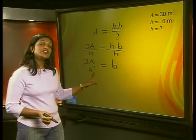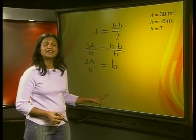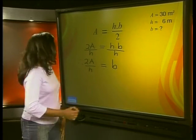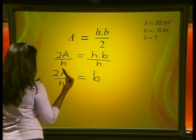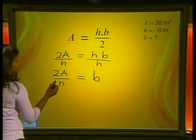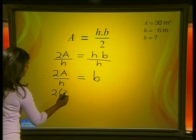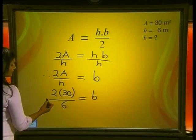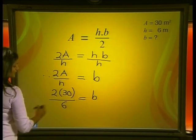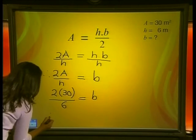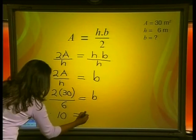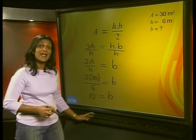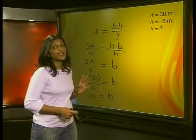So you see, B is written on its own on one side, which means that B is the subject of the formula. Let's check if our answer matches with the one we got previously. We know that A is 30 meters squared and H is 6 meters. So substitute these values here. We get 2 times 30 divided by 6 is equal to B. Simplifying this, we get 2 times 30, which is 60. And 60 divided by 6 gives me 10. So my answer is 10 is equal to B. Remember that we must always check that these values for B and H do in fact give us an area of 30 square meters.